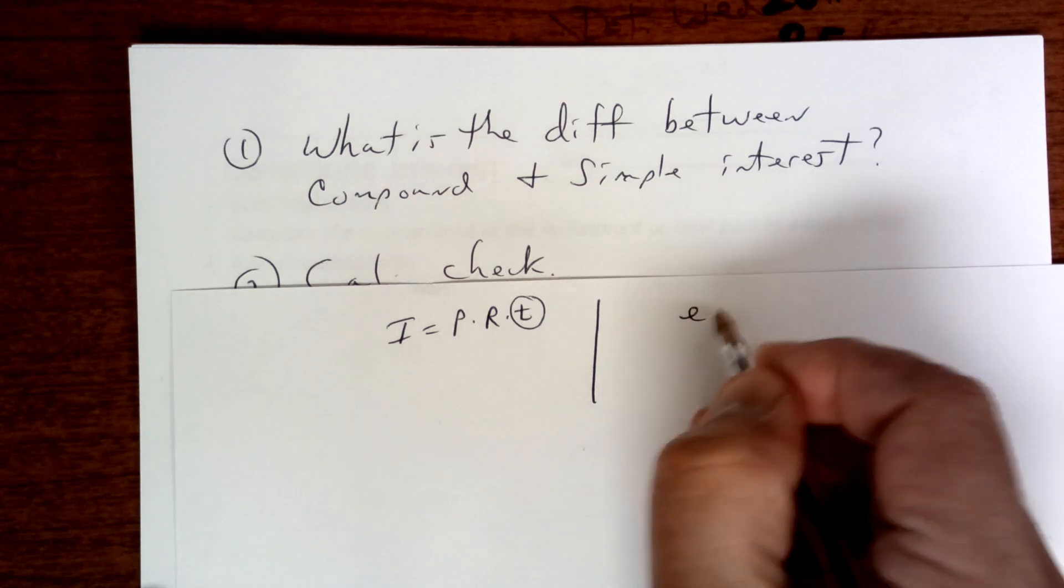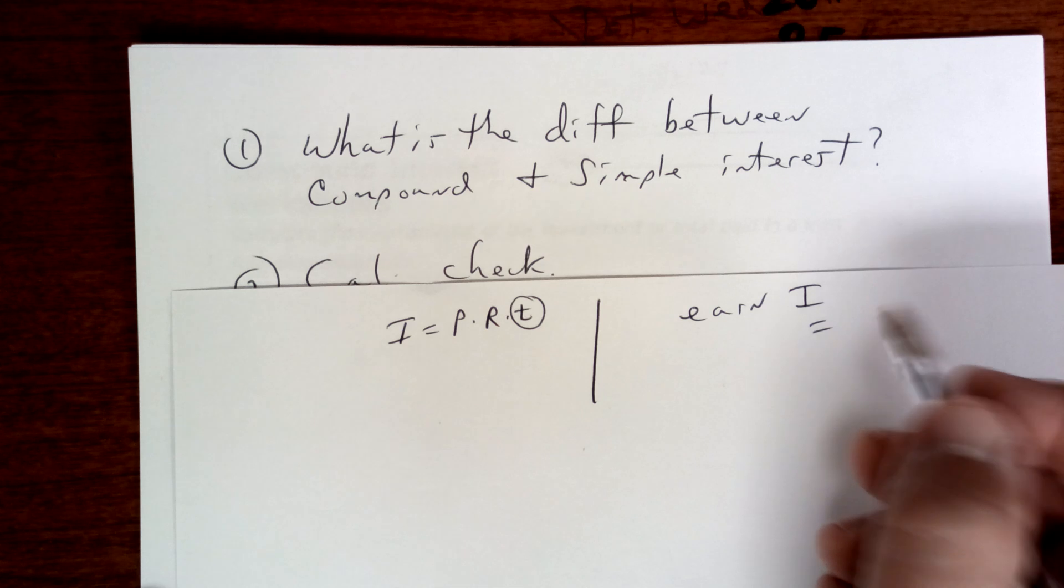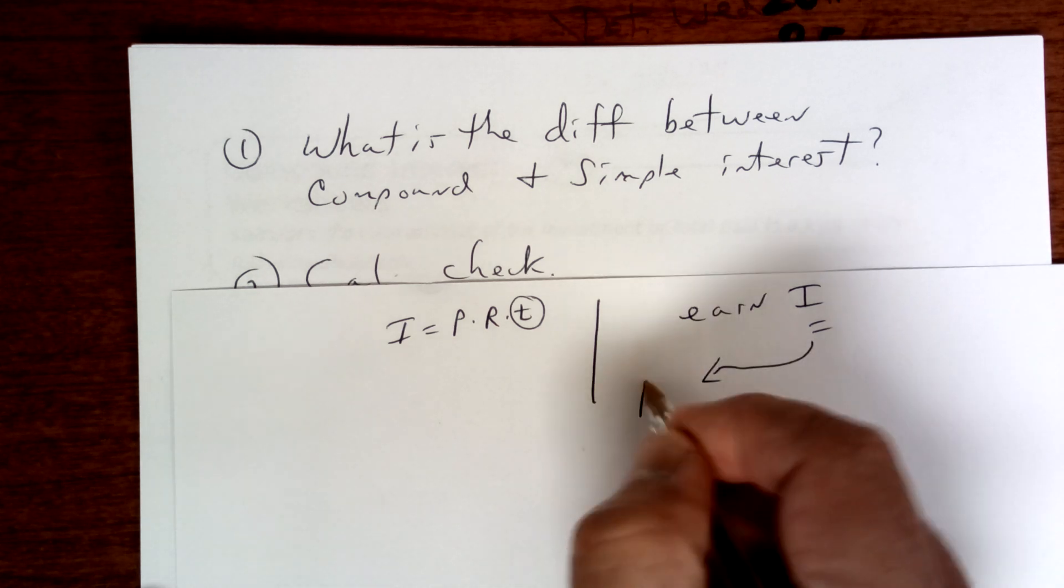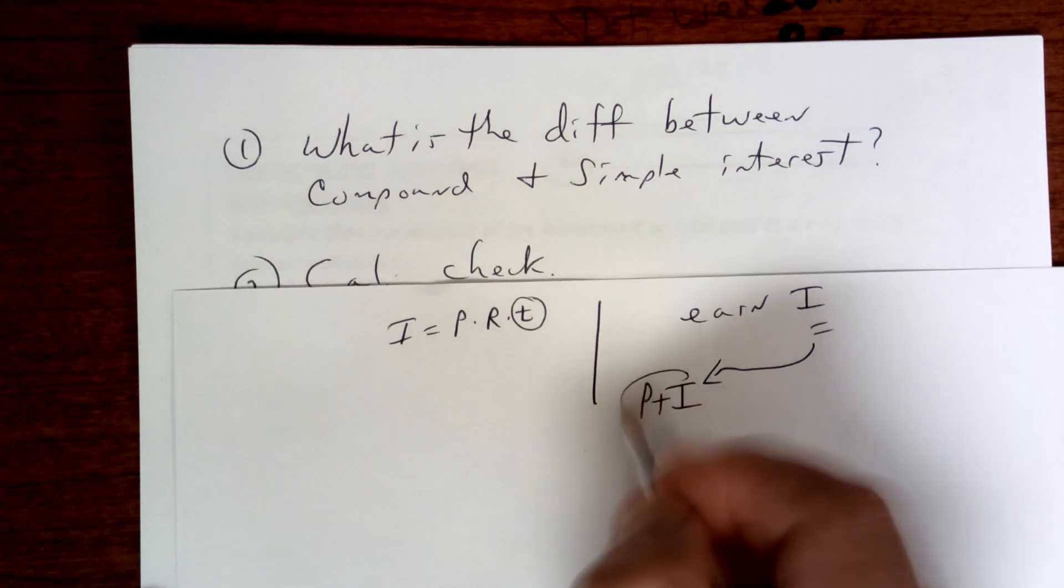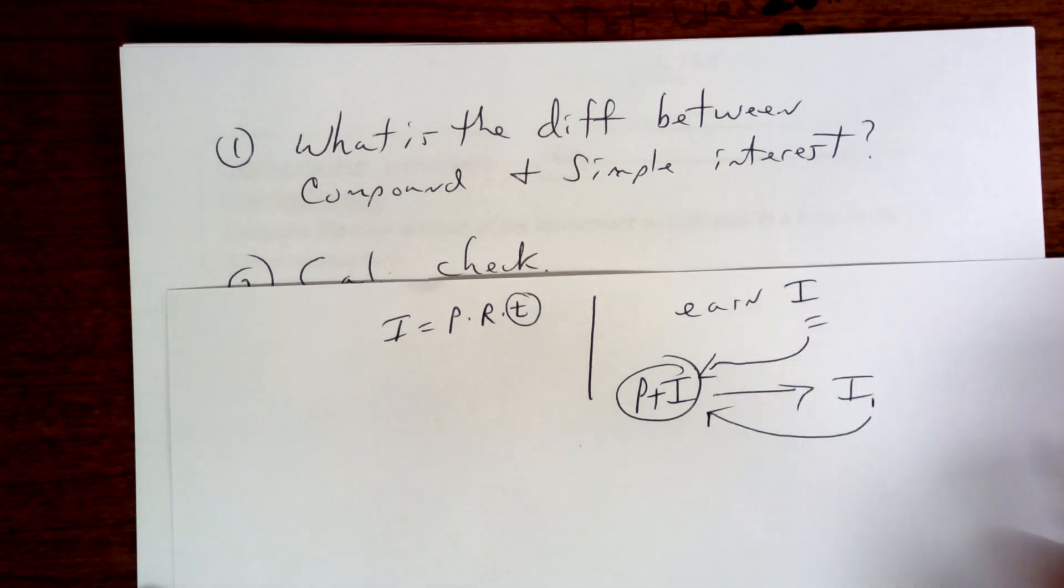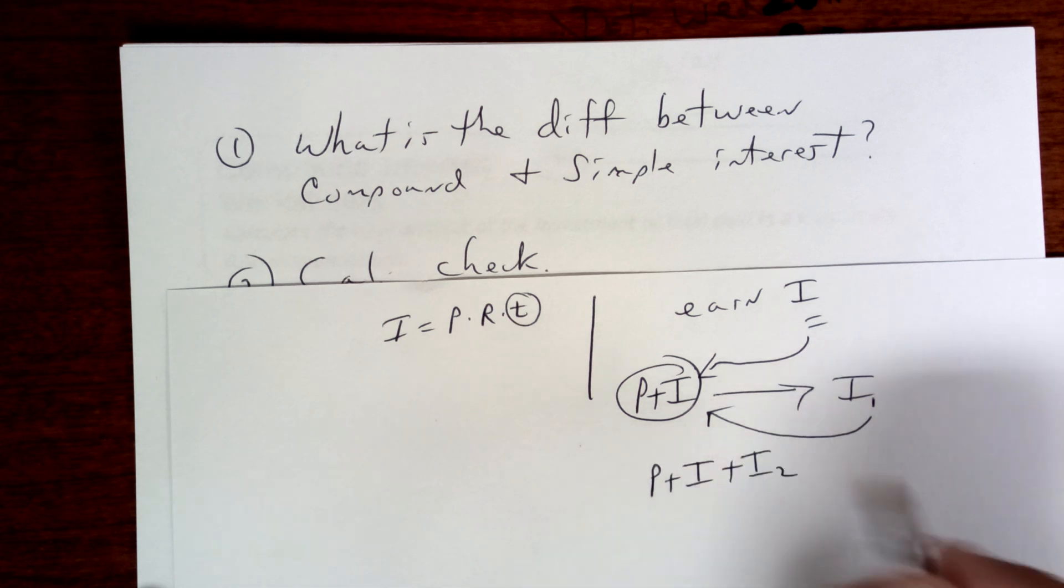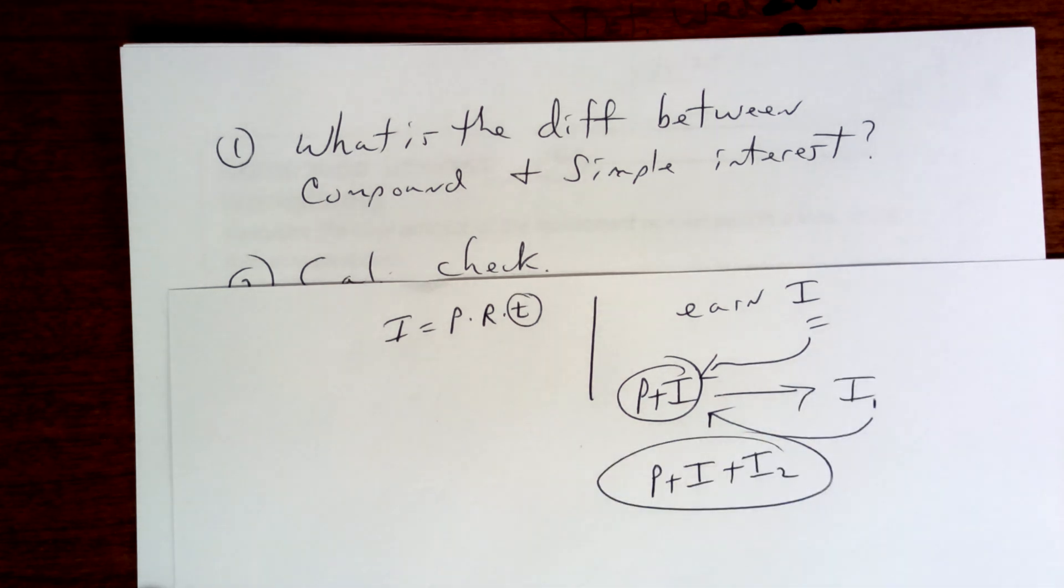So it's interest equals principal times rate times time. Whereas compound interest, what you do is you earn interest, you earn money, and then that money is added to your principal. And then that money earns interest, and then that money is added to your principal.